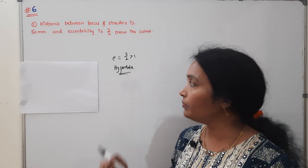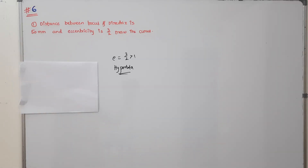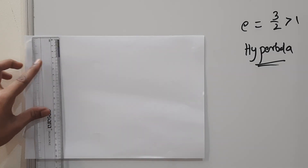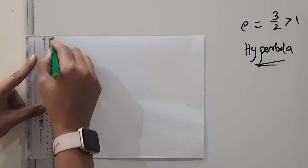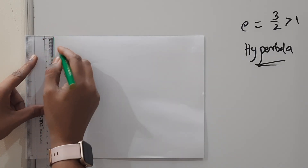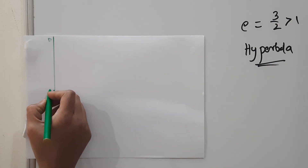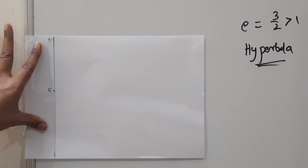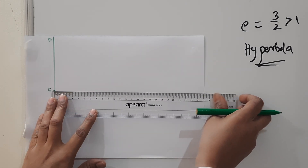This is the directrix. Now let's work on the hyperbola. First, let's draw a straight line for the directrix, labeling it D. I'm drawing the directrix as a vertical line in D, and the horizontal line comes in as the axis.